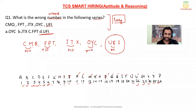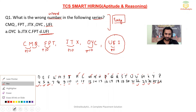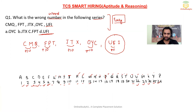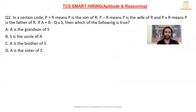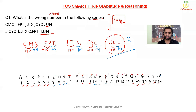We can verify by checking the second and third letters. M to Q: plus 4. P to T: plus 4. T to X: plus 4. Y to C: plus 4. But F to I is only plus 3, which does not follow the pattern. This confirms UFI is the wrong word. This question is from the topic of coding and decoding, which is very important for TCS Smart Hiring.